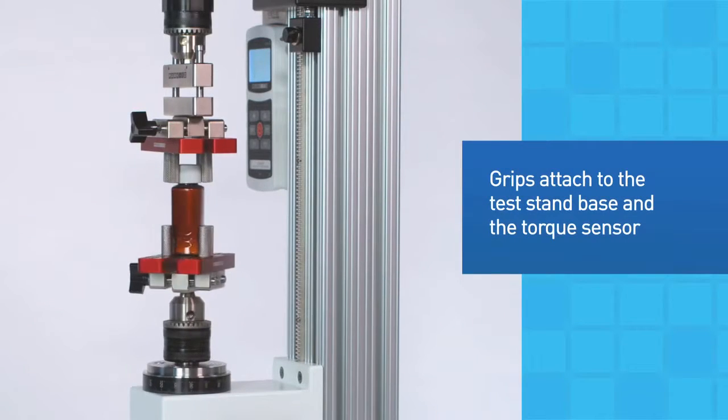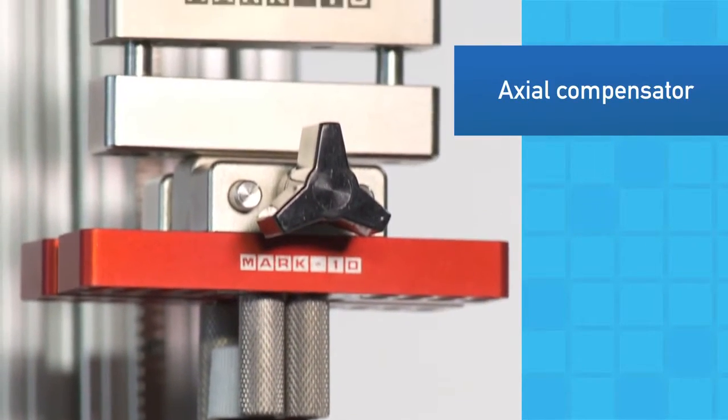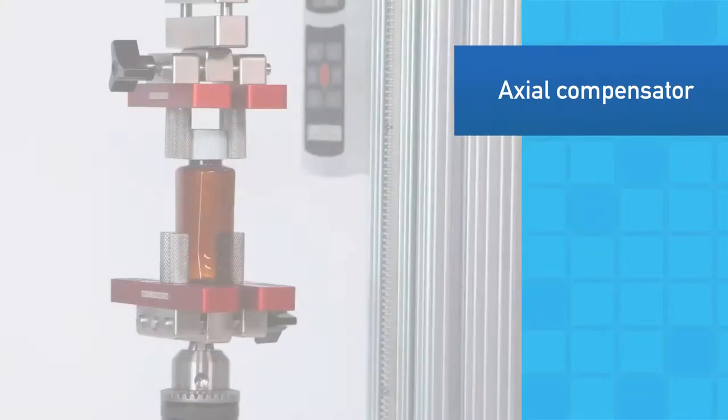Grips can be fastened onto the base and torque sensor. An available axial compensator allows for vertical movement for applications such as fastener torque and bottle cap torque.